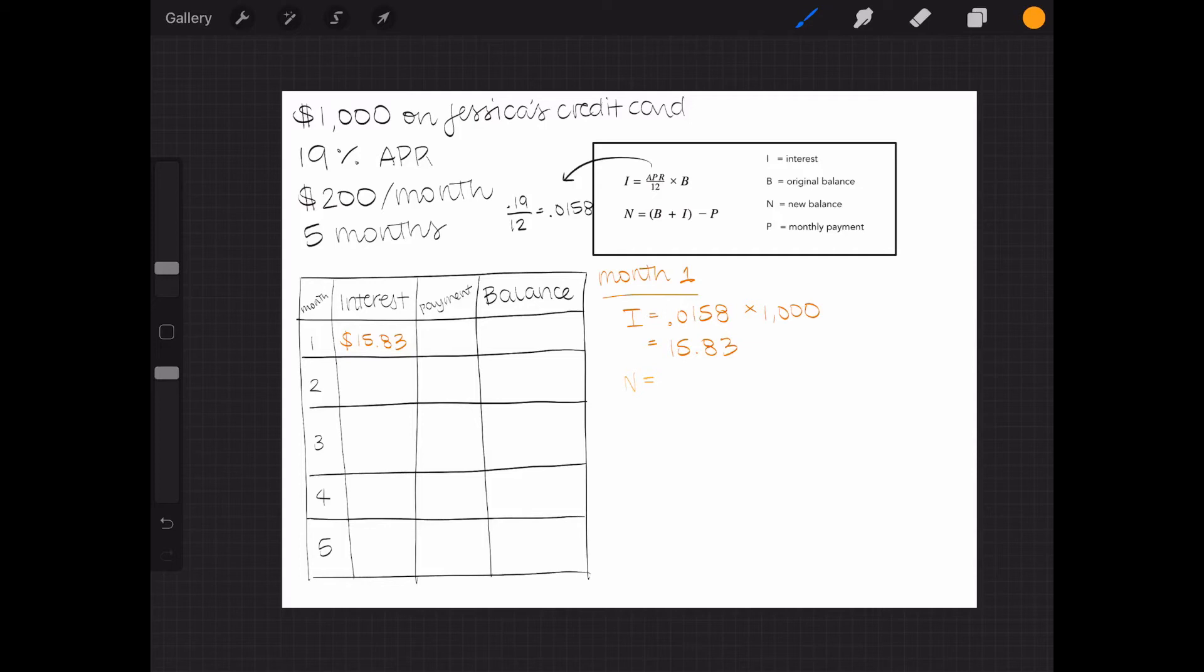Now I can use the second formula to calculate the new balance. I first need to add the original amount owed to the interest owed, so $1,000 plus $15.83 is $1,015.83. In contrast to Tim though, Jessica wants to make higher monthly payments.